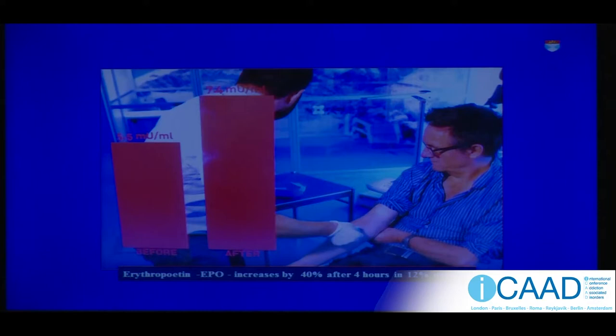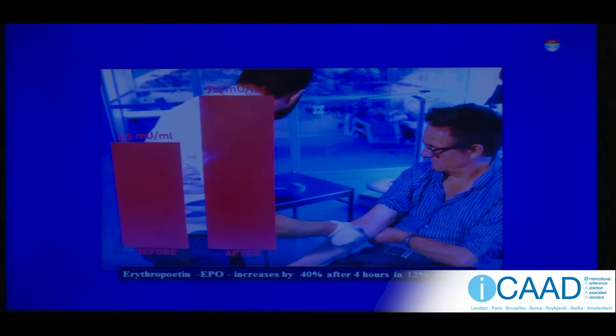What he found was that after staying four hours with half the normal oxygen level, his EPO level went up by 40%. Think about it — he's breathing less oxygen but producing more EPO and more red cells. This is a paradox, and in fact it is the paradox of life, because what we know is that oxygen controls genes.